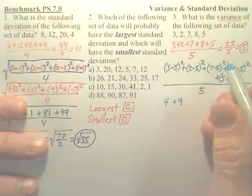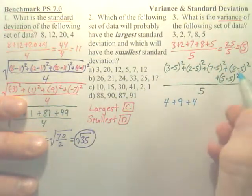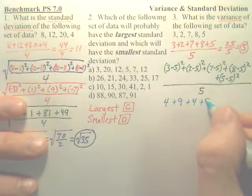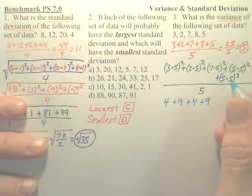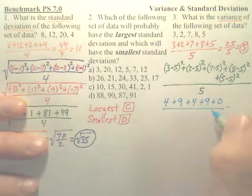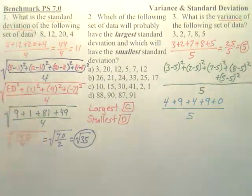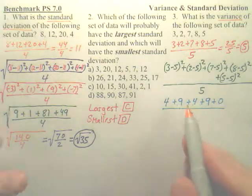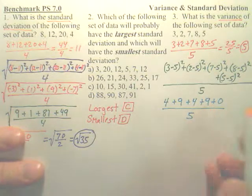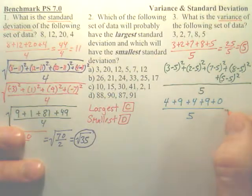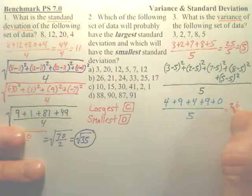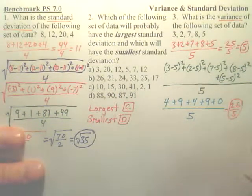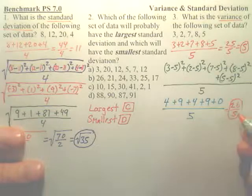7 minus 5 is 2. 2 squared is 4. 8 minus 5 is 3. 3 squared is 9. 5 minus 5 is 0. 0 squared is 0. And we divide by 5. Okay. We're almost done. Looks like we have, look here, we have a 13 plus 13 is 26. And 26 is not divisible by 5. So, that is my variance. My standard deviation would be the square root of that.